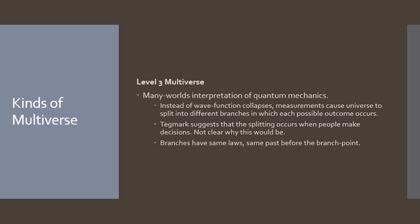What about the level 3 multiverse? The level 3 multiverse is basically the many worlds interpretation of quantum mechanics which we discussed in a previous lecture. So instead of postulating wave function collapses, this theory would posit that when a measurement is done the universe splits into different branches, different sub-universes if you will, such that there is one branch in which each of the possible measurement outcomes occurs.